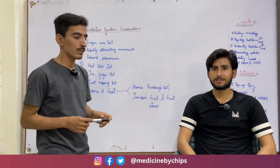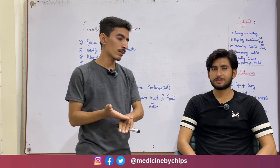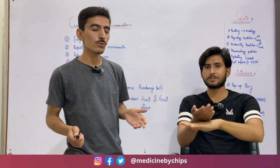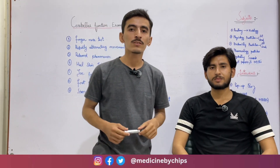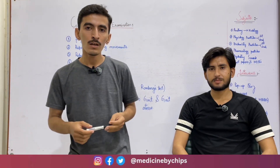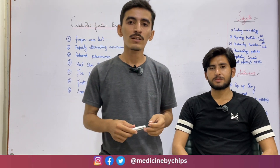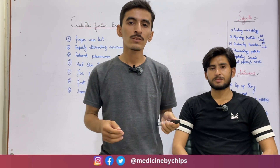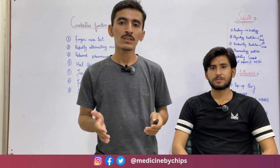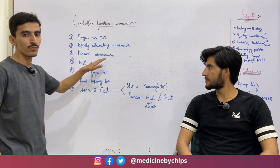Our next test is the rapidly alternating movement test. We will ask the subject to rapidly pronate and supinate one hand on the dorsum of the other hand. A normal subject can rapidly perform these movements, but in a patient with cerebellar disease these movements will be slow and clumsy — this phenomenon is called dysdiadochokinesia. It is also seen in extrapyramidal disorders such as Parkinson's disease and in pyramidal disorders such as internal capsule ischemia.